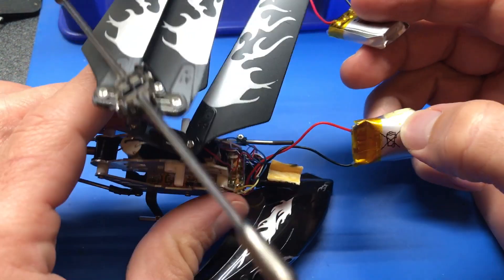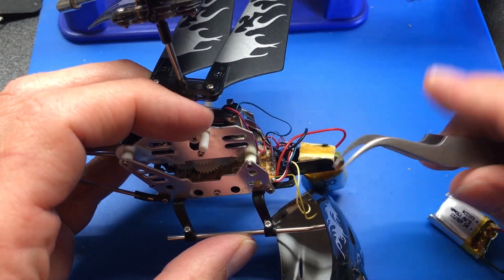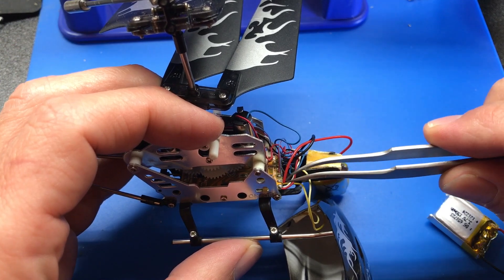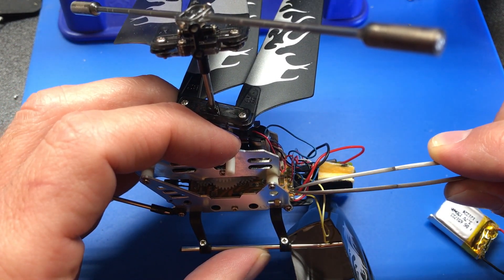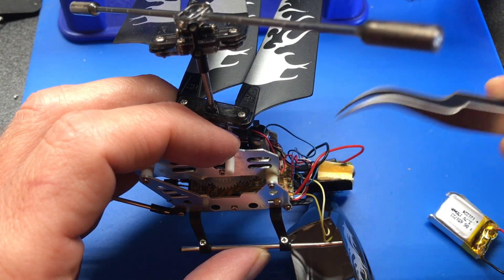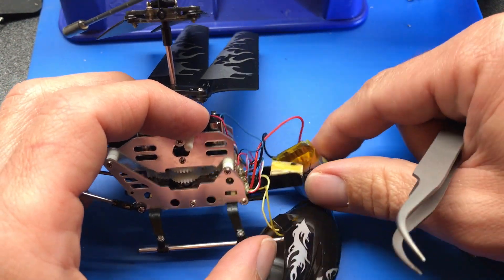You can solder it in right here onto the board. You really need some tight soldering equipment to do that, to be able to get in here and not burn anything else. Maybe the size of your tweezers. So most people probably don't have those kinds of soldering irons.